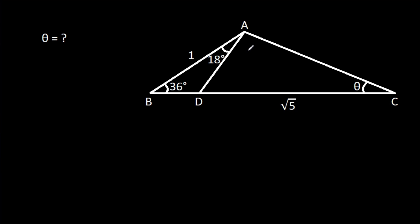In this video, we have been given that AB is 1, CD is root 5, angle ABD is 36 degrees, angle BAD is 18 degrees, and angle ACD is theta. We have to find theta.